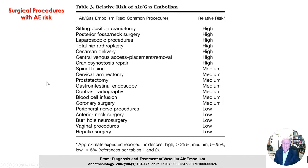On the surgical side, some operating room procedures are known to be very high risk. We've already discussed sitting-position craniotomy as very high risk, as is any operation where the surgical site is well above the level of the heart. Also high risk are posterior fossa and neck surgery, laparoscopic procedures, total hip arthroplasty, and caesarean sections. You need to know which procedures are high risk going into the operating room, with medium and low risk procedures also to be aware of.